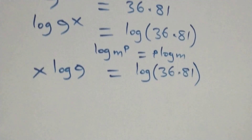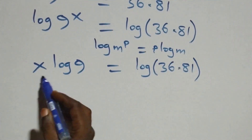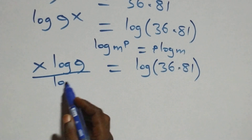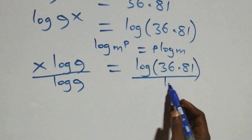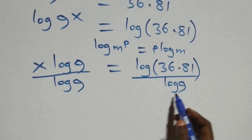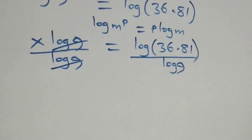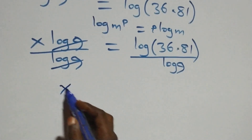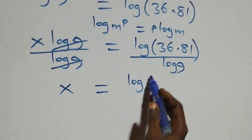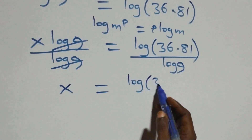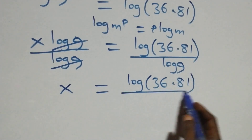From here we divide both sides by log 9. The log 9 terms cancel each other, and we have x left, which equals log of 36 times 81 over log 9.